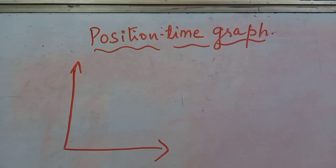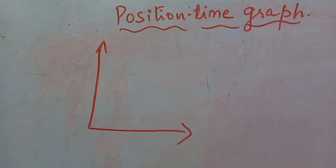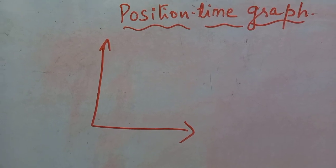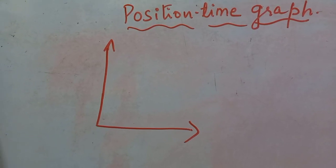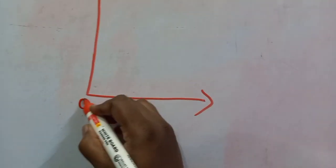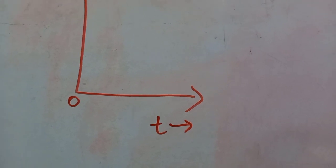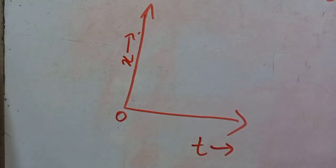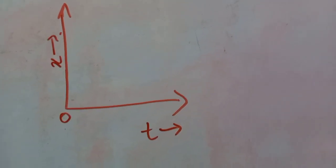Now let us look at the position-time graph — how we can graphically represent the position of a body with respect to time. If the body is moving, we want to see which position it occupies at a particular time. In a position-time graph, the origin is taken, time is along the x-axis, and position or displacement (x) is along the y-axis. We will look at a number of graphs.